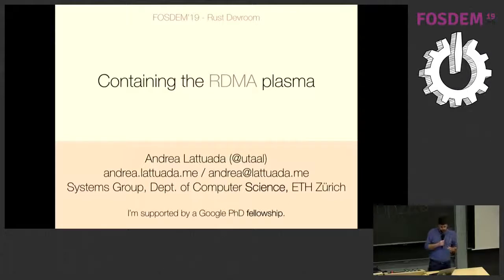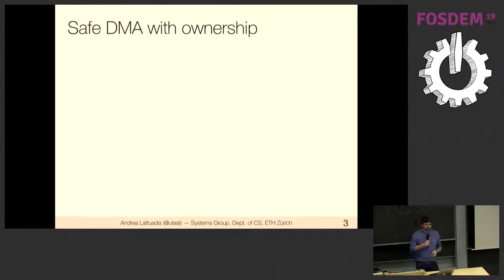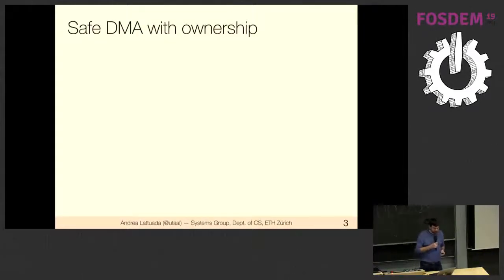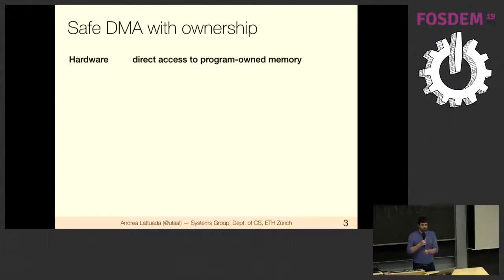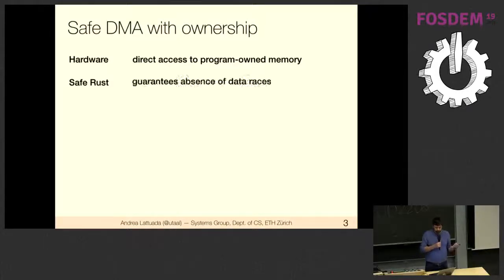Here's an executive summary of what the talk is going to be about. We're going to see how we can use Rust's ownership and safety semantics to make DMA look a little safer than we might expect. The problem is: we have hardware with direct access to program-owned memory — a vector you have allocated — and a network card that can write directly to it without the CPU even knowing. This seems in contrast with safe Rust, where we are guaranteed no data races. Data races — quick refresher: